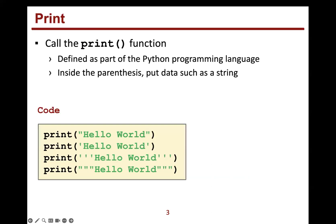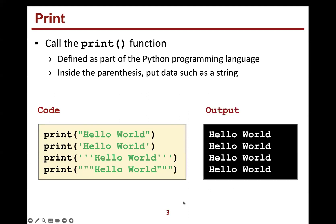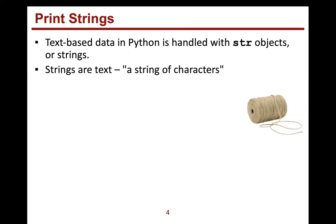The print function is already defined for us in the Python programming language. Here are examples of code where we said print with double quotes hello world, then with single quotes, triple double quotes, and triple single quotes. The output all looks the same — it all says hello world without the quotes. The quotes are not displayed in the output because we use them to define that we have a string containing the letters that make up hello world. So with print, we are printing strings.